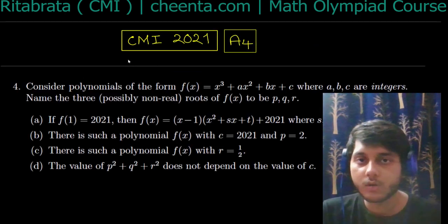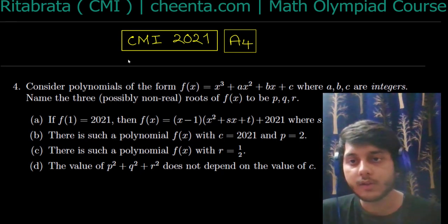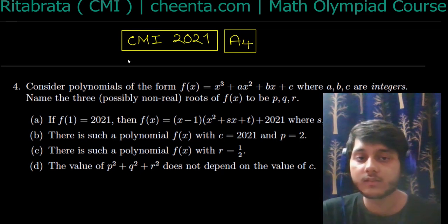Hello, today I want to discuss a problem that appeared in CMI entrance exam 2021. It's a polynomial problem that also involves number theory. The question says: consider polynomials of the form f(x) = x³ + ax² + bx + c, where f(x) is a monic integer polynomial because a, b, c are integers.